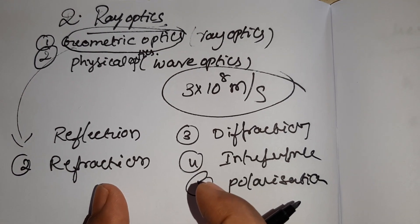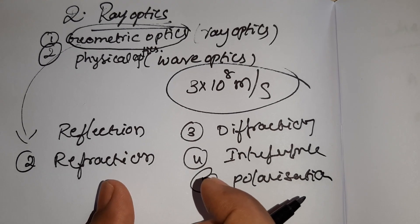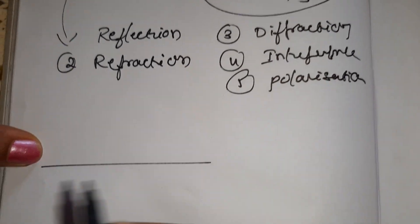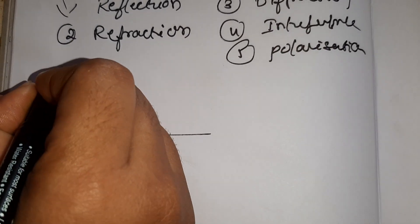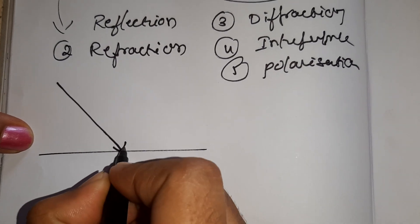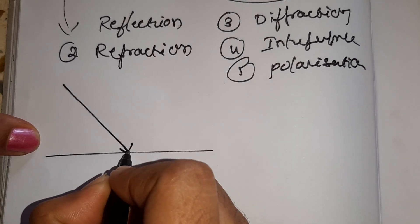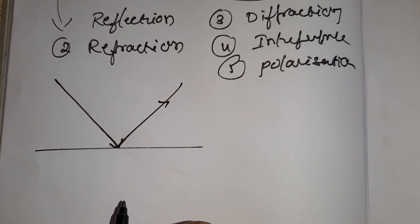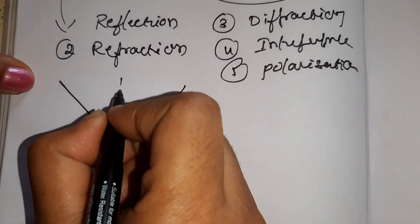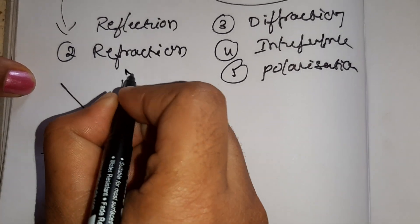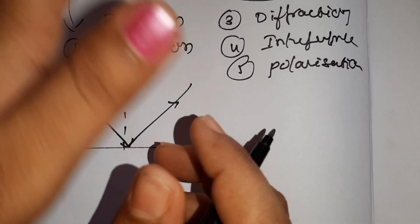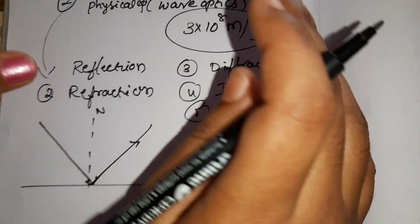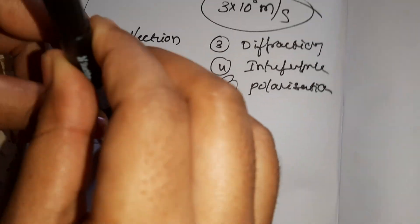Reflection is the bouncing back of light. When light is incident on a surface, it bounces back — this is reflection. If we look at the surface, we can see the normal in this direction.